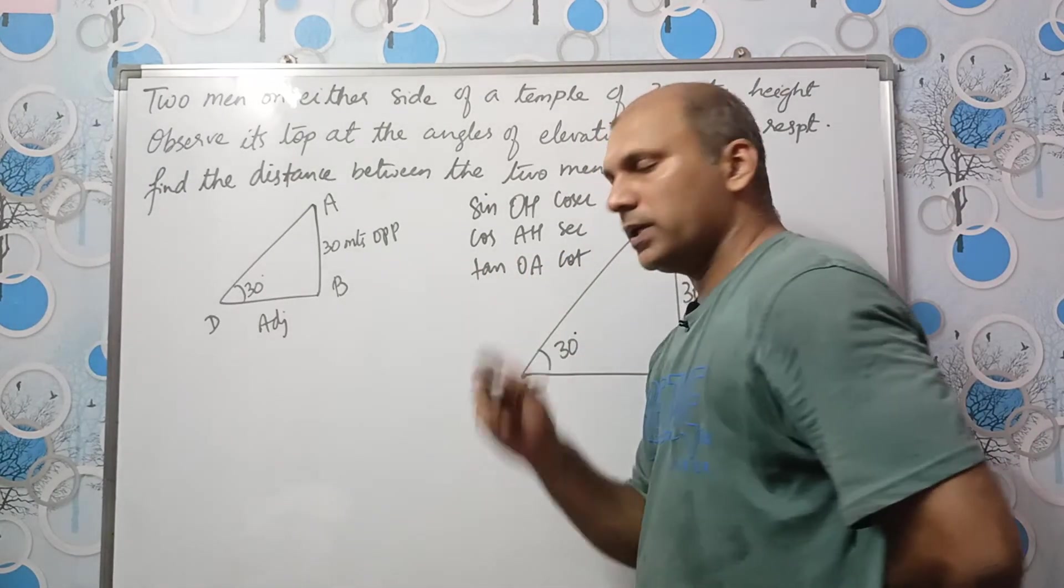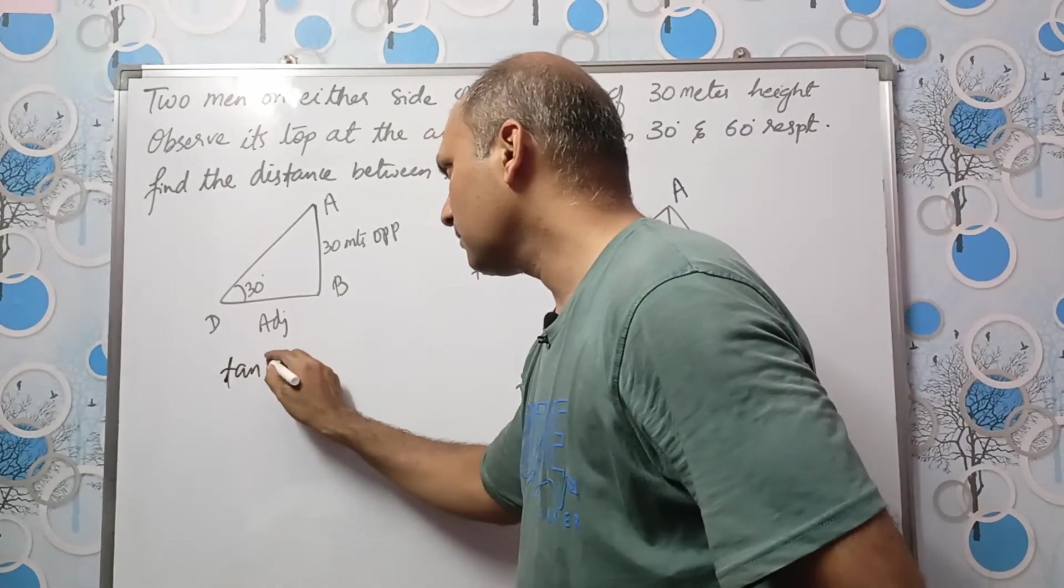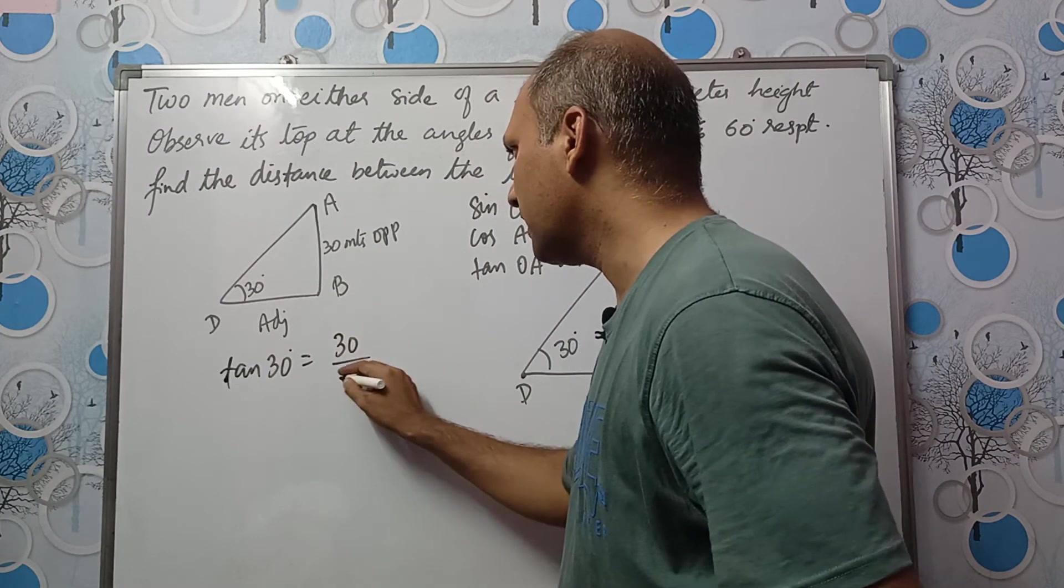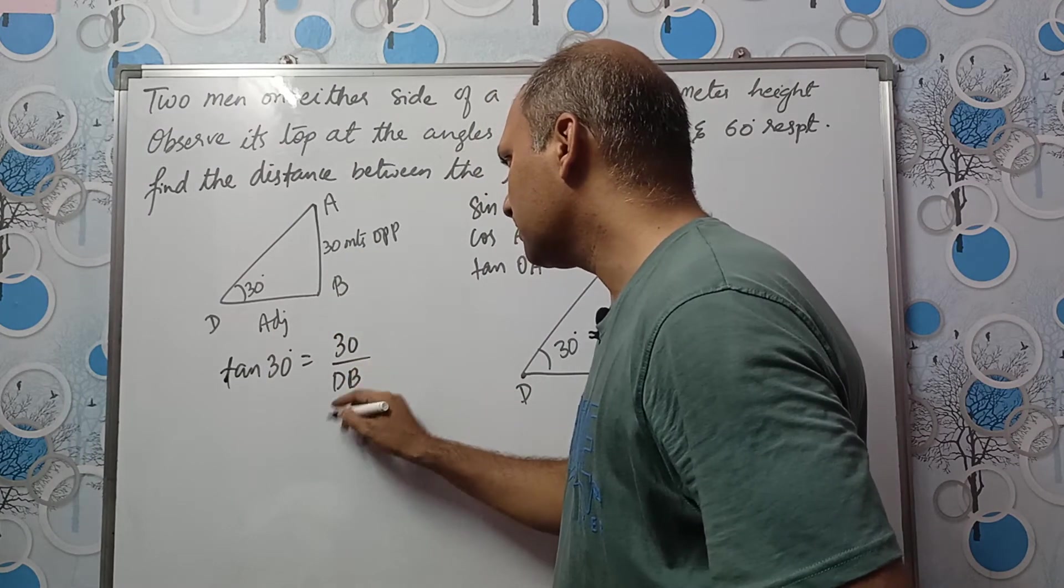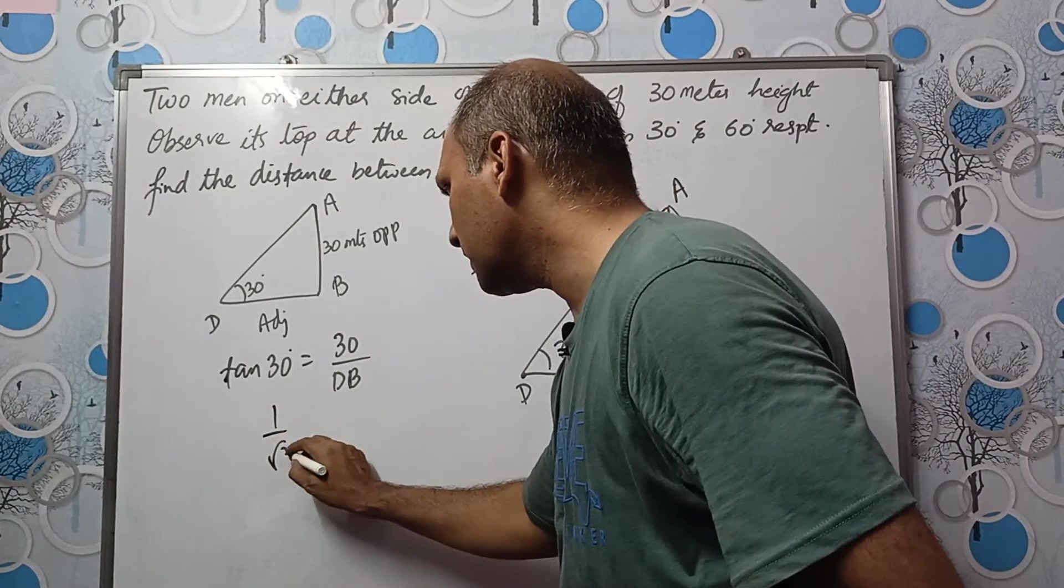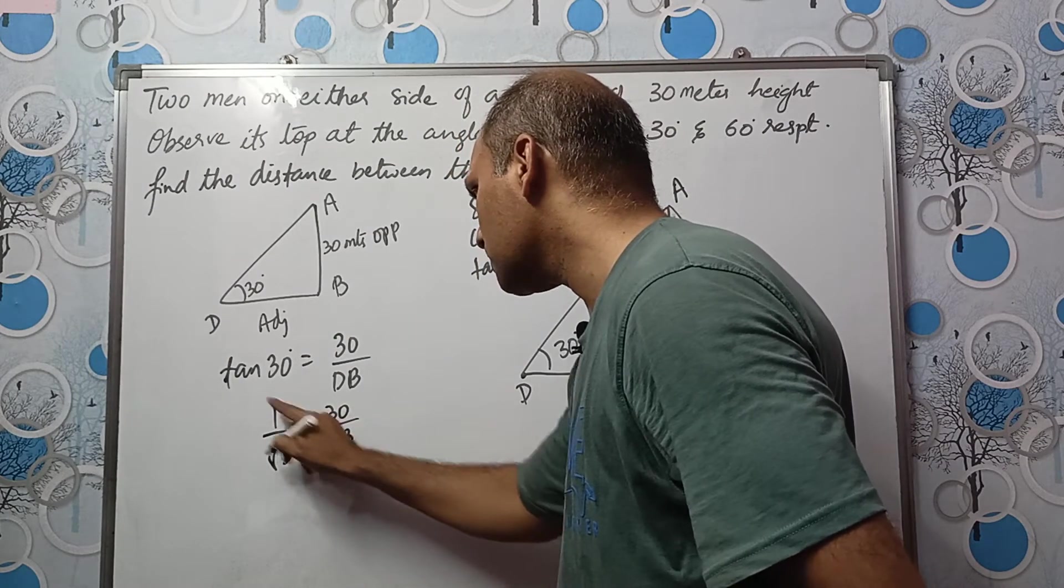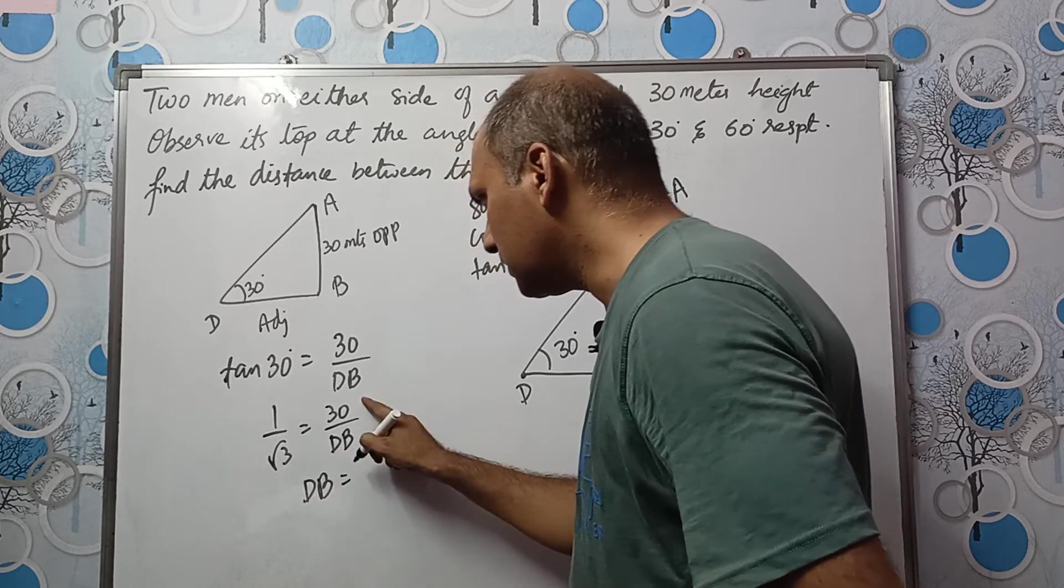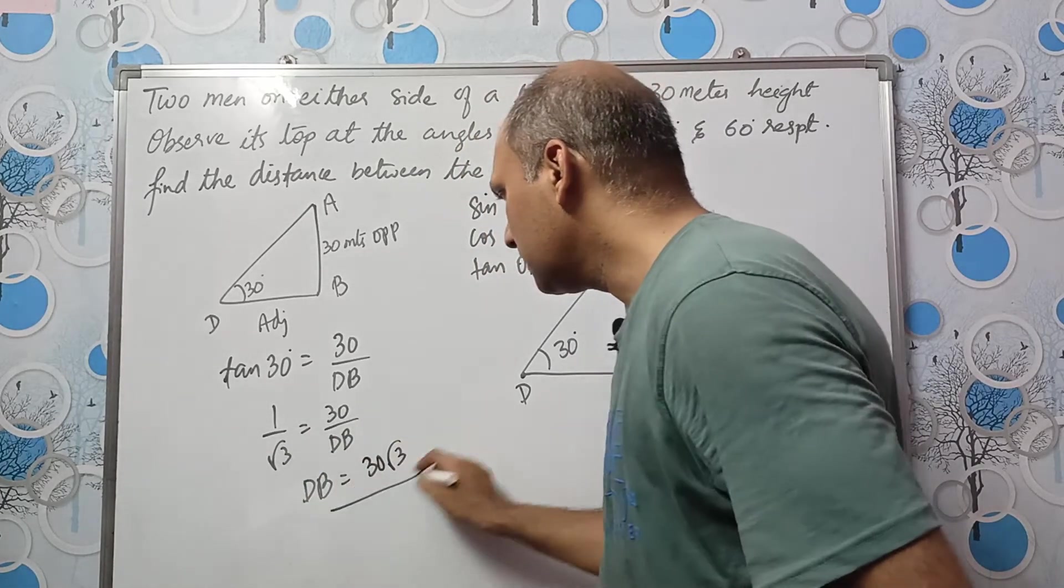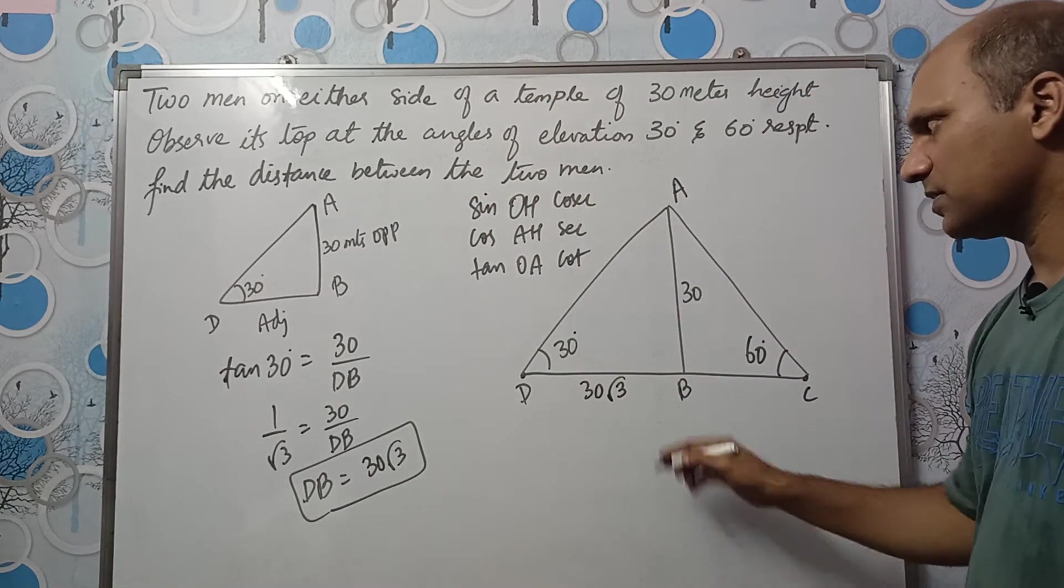We can either use tan or we can use cot. So let us use tan. Tan 30 degrees is equal to opposite divided by adjacent which is 30 divided by DB. Tan 30 is 1 by root 3. So 1 by root 3 is equal to 30 by DB. If you cross multiply, DB will be equal to 30 root 3. This is 30 root 3 meters.